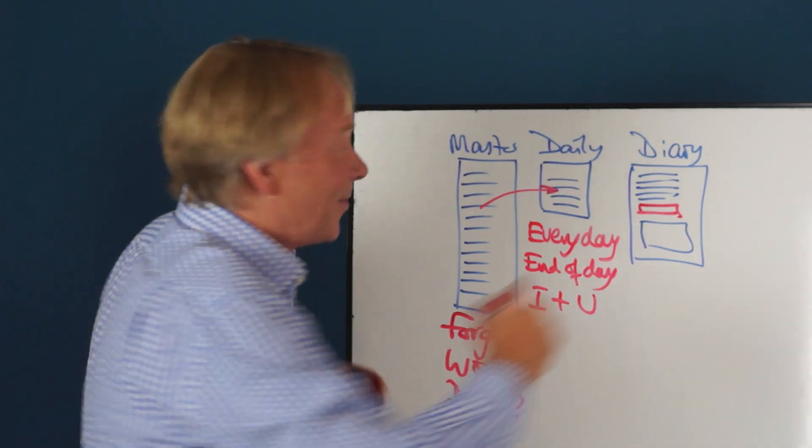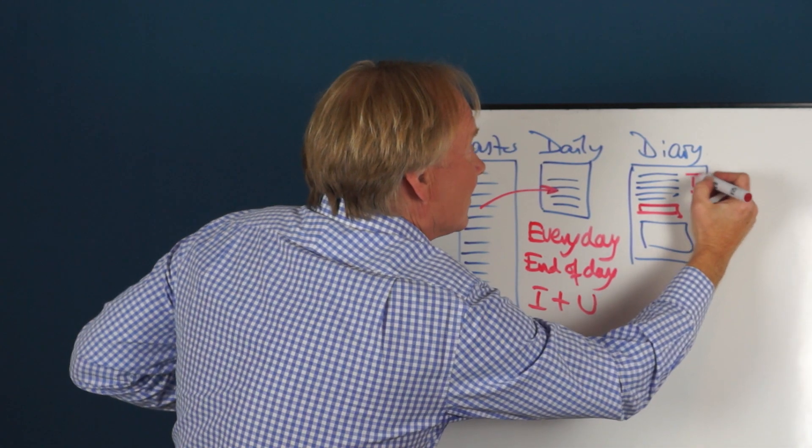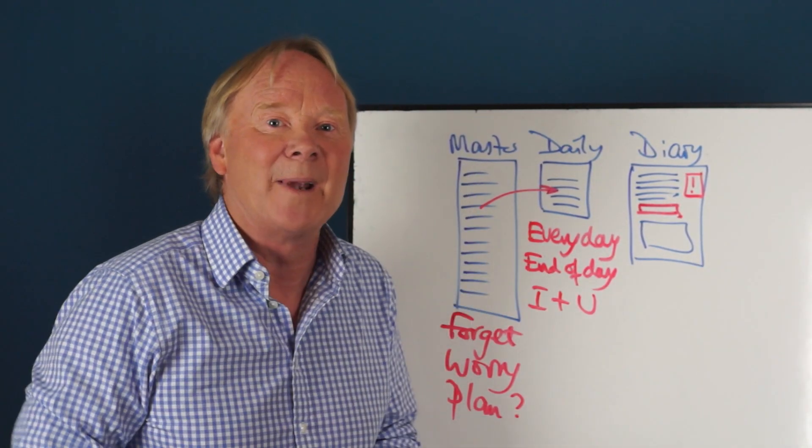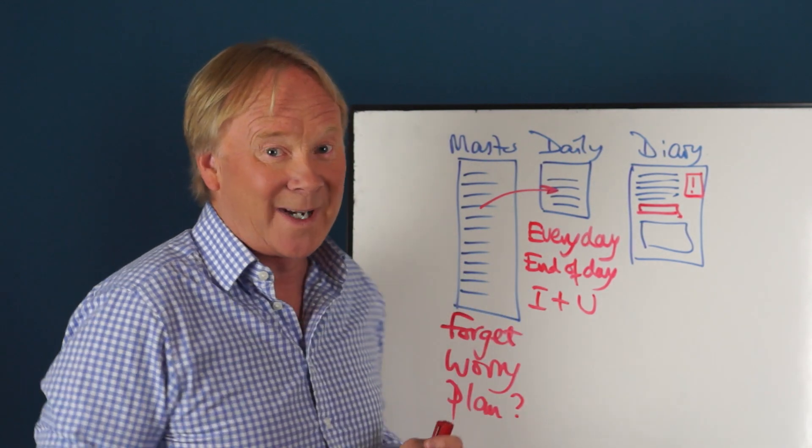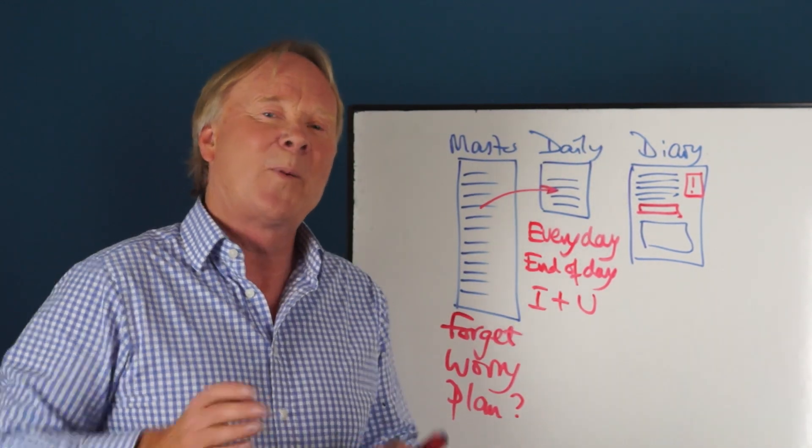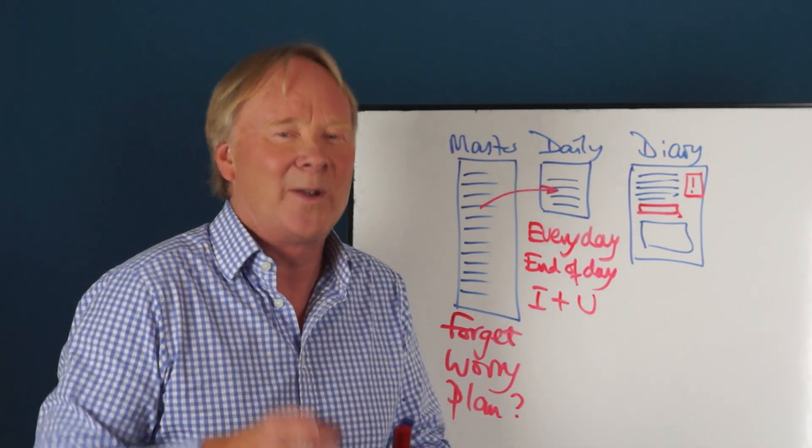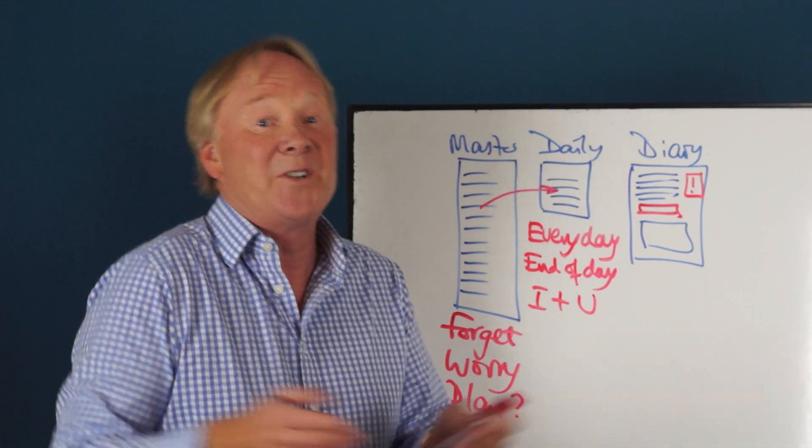And finally, make a note of any promises that people have made to you. Get a date and put the promise into that date in your diary, so you won't forget to hold them to account if they haven't done it by that date. People will get much better at keeping their promises to you if they know that you're going to remember. And you can do this with almost no effort at all, just put it in your diary.